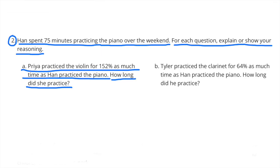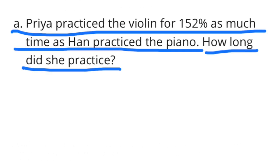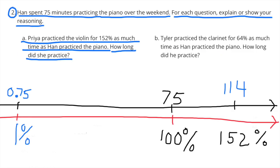Number 2A: Han spent 75 minutes practicing the piano over the weekend. Priya practiced the violin for 152% as much time as Han. How long did she practice? I made a double number line with Han's 75 minutes above 100%. I divided 100% by 100 to get 1%, and divided 75 minutes by 100 to get 0.75. Then I multiplied 0.75 times 152, which gave me 114 minutes. Priya practiced the violin for 114 minutes.